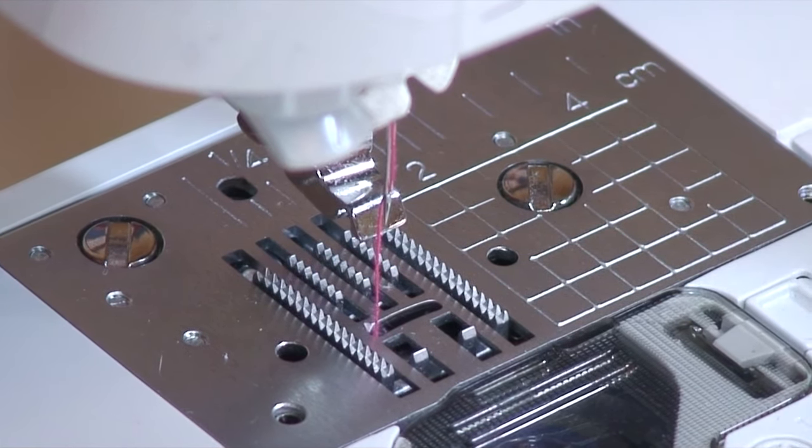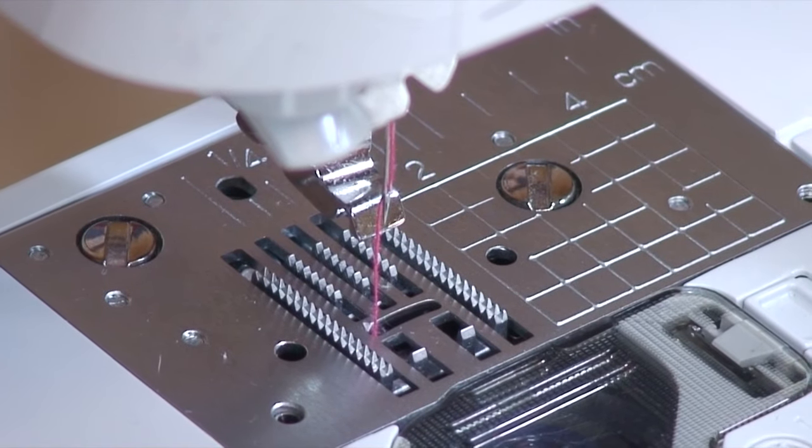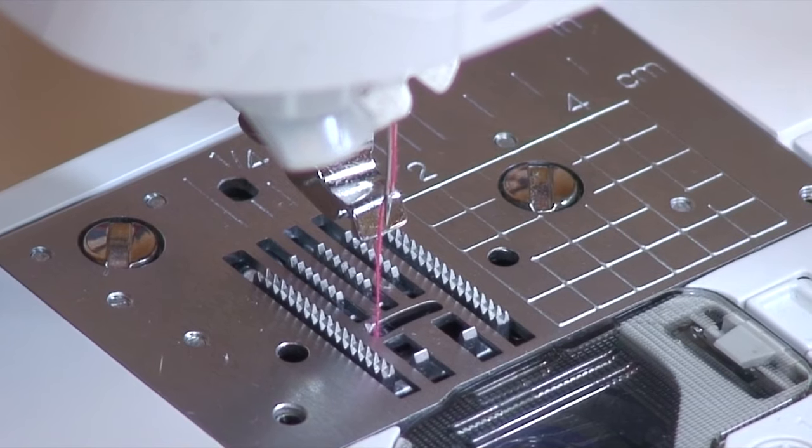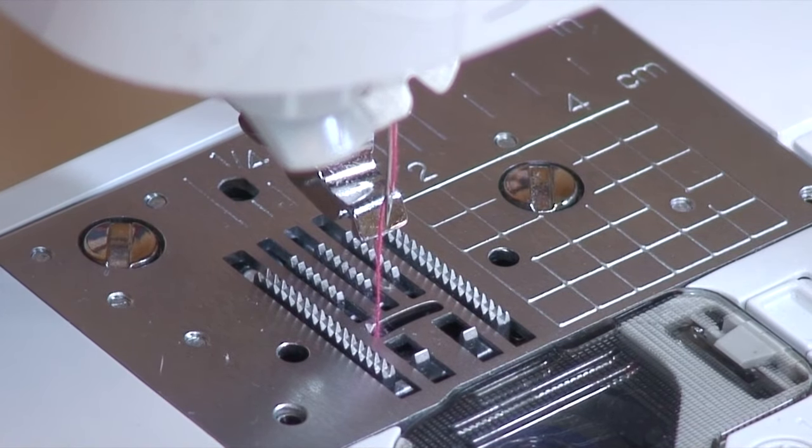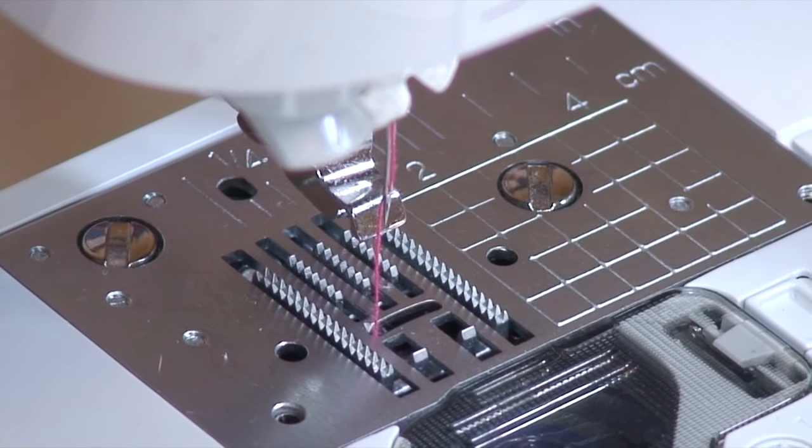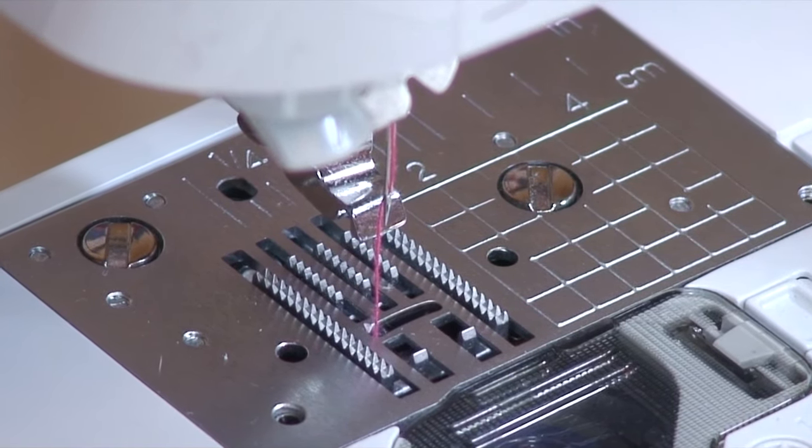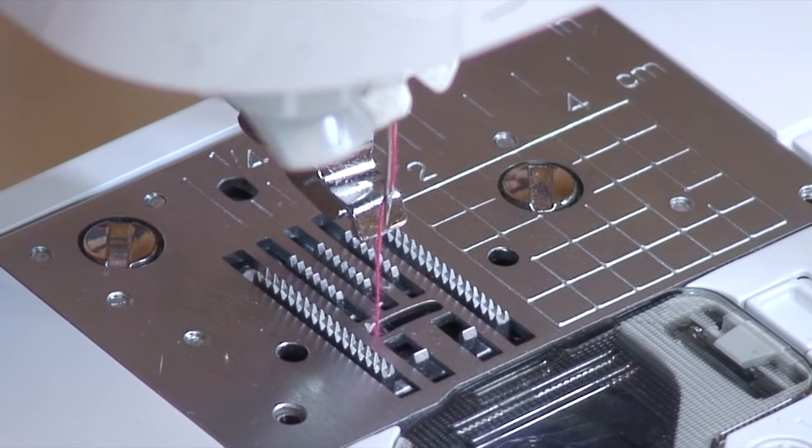So while most sewing is done with the feed dogs up, there are some tasks like darning—I don't know really who does that anymore—and free motion embroidery or free motion quilting, and sewing on buttons with your machine that require the feed dogs to be lowered so they're not pulling the fabric.